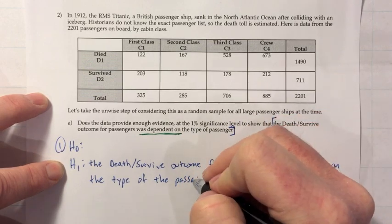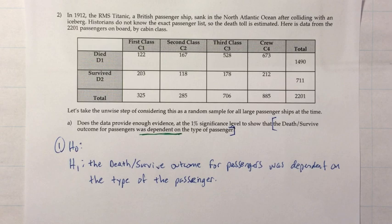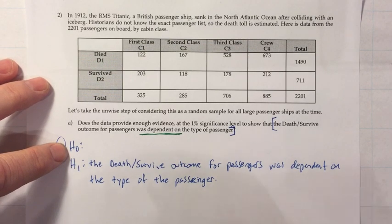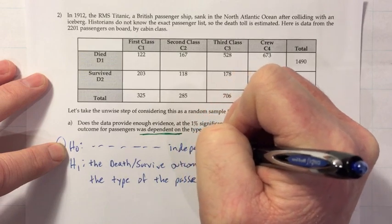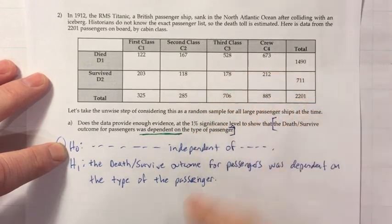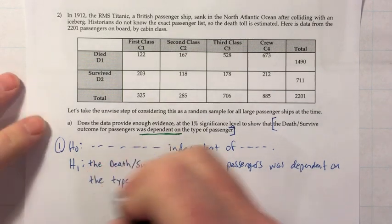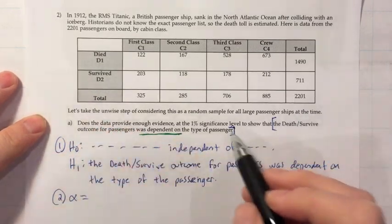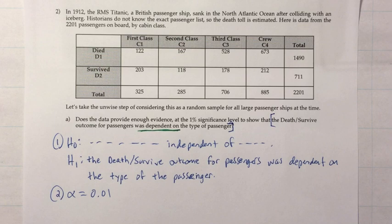We're talking about what class their ticket was — first class, second class, third class, or crew — with first class generally being the most expensive, like airline flights today. H0 would be the same sentence but saying 'independent of' the passenger type instead of 'dependent on.' I don't mind if you use dot-dot-dot on one, but you have to write one out completely. Step two: the significance level is already given — alpha = 0.01.